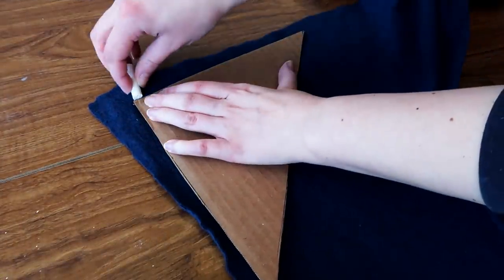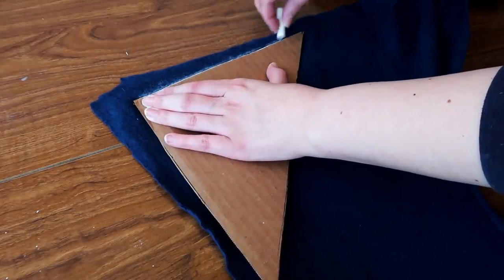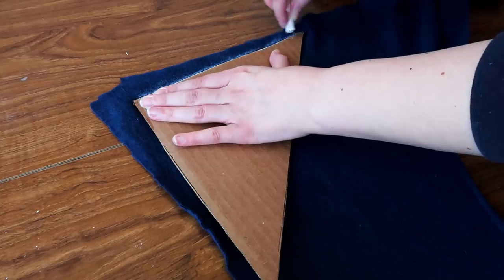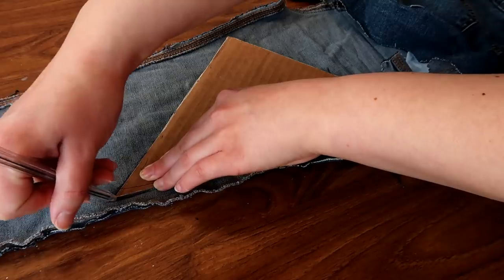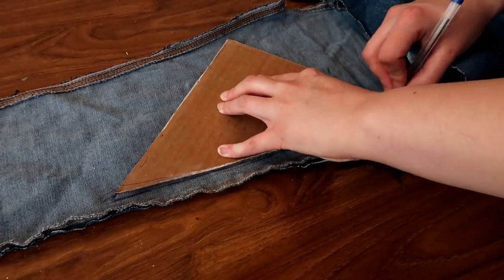Next you want to place a template on the reverse side of the fabric and draw around it. I always use chalk just because I have it and it shows up on fleece very nicely. But you can use a pen or a pencil to do this as long as it doesn't show through to the other side of the material.